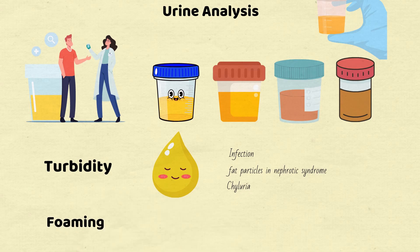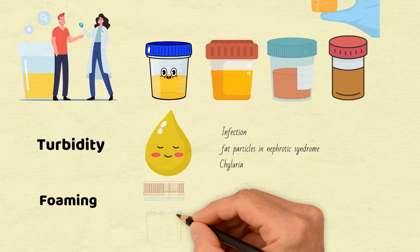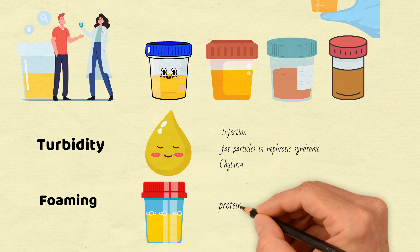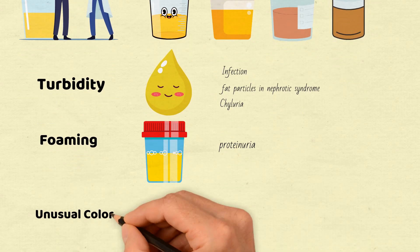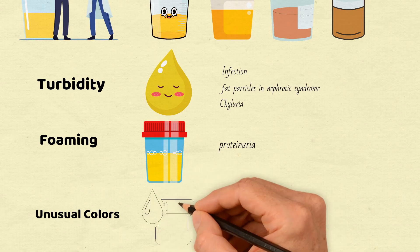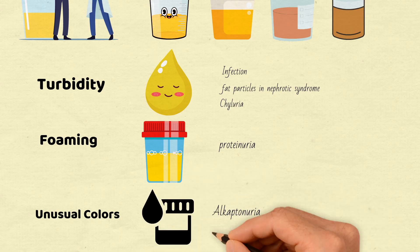Foaming: if urine foams excessively when shaken, it could signal proteinuria or excess protein in the urine. Unusual colors: rare conditions such as black urine in alcaptanuria or certain medications can cause unique color changes.